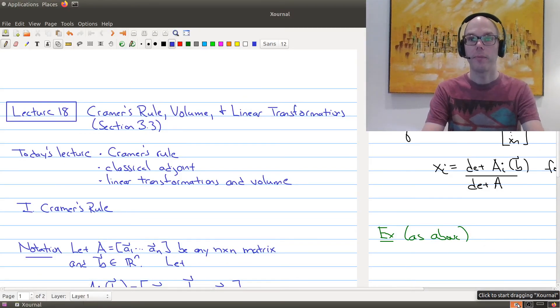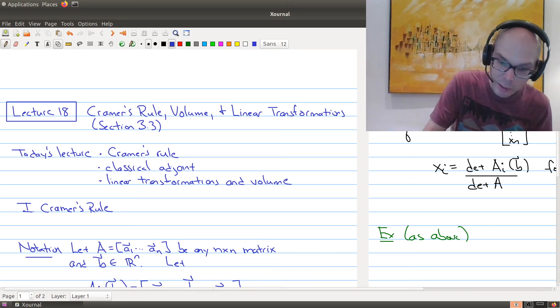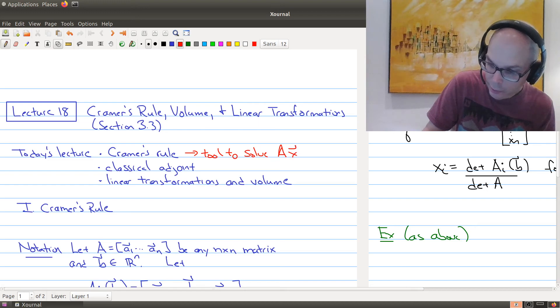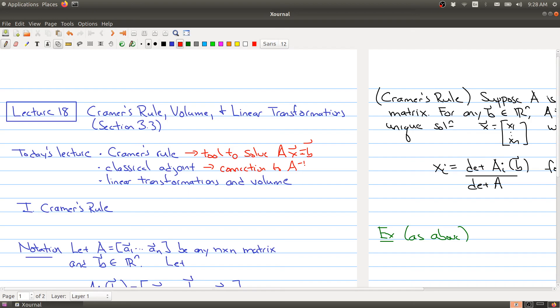Hello and welcome to Lecture 18 of Math 1B03. In the last couple of lectures, we've been looking at what a determinant is. And in today's lecture, which is based upon Section 3.3 of the textbook, we're going to be looking at some applications of the determinant. So in particular, we're going to be looking at Cramer's Rule, volume and its connection to linear transformations, and the classical adjoint and its connection to the inverse. So let's start by talking about Cramer's Rule.